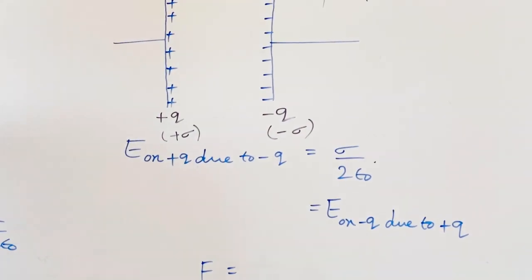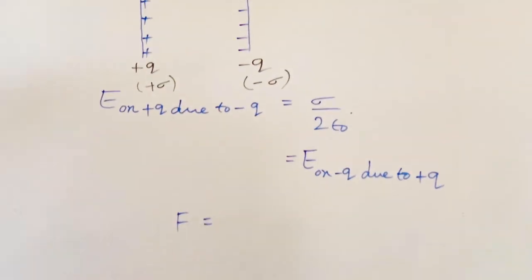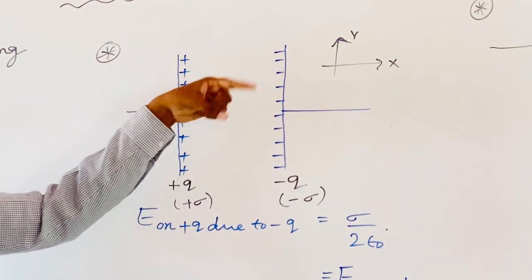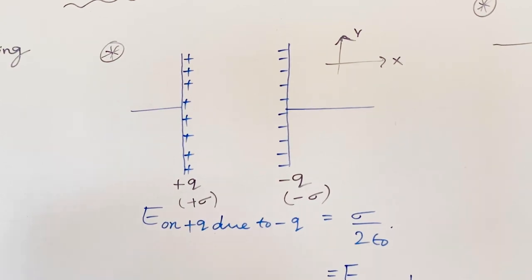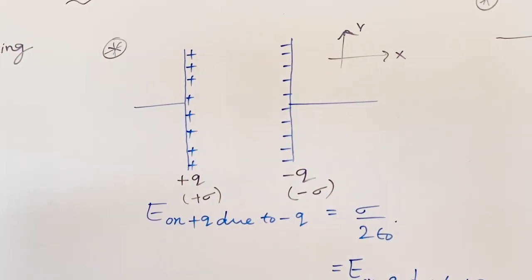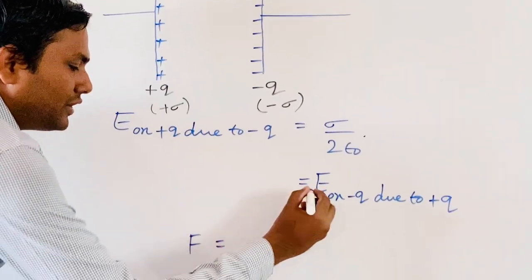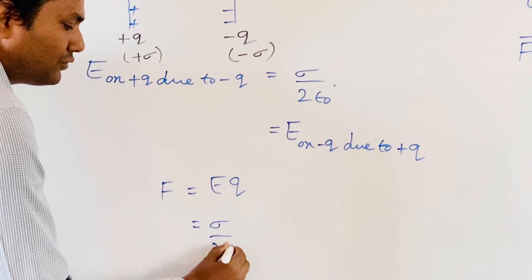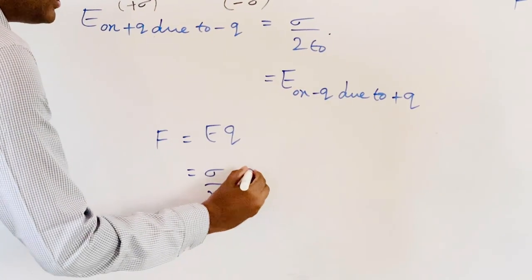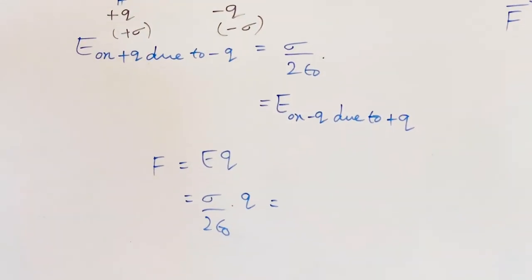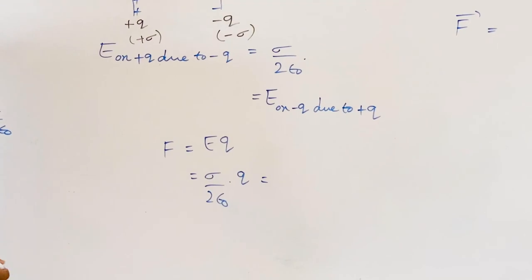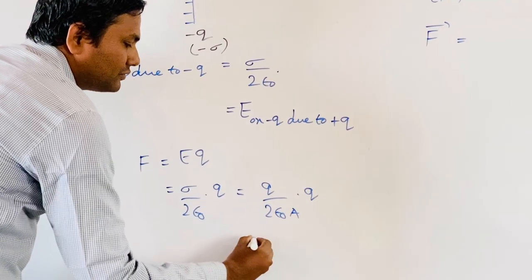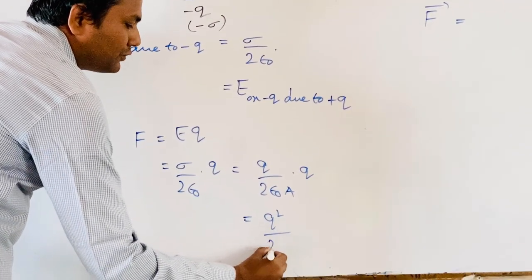To calculate the force, the charge plus q behaves as a test charge in the field created by minus q, and minus q behaves as a test charge in the field created by plus q. Therefore, force F equals E into q, where E equals sigma by 2 epsilon naught. Substituting sigma as total charge per total area, we get F equal to q squared by 2 epsilon naught times A.